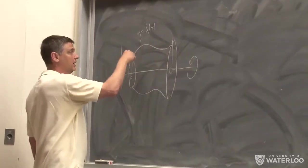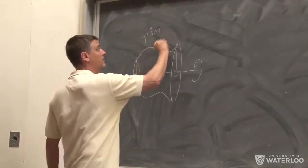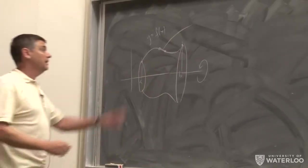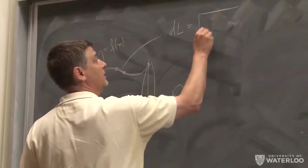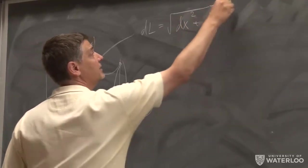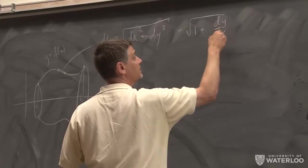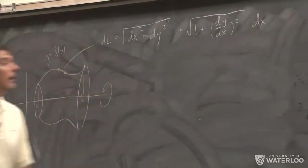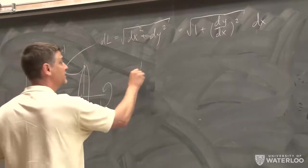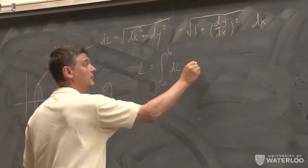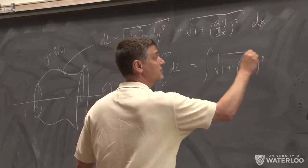To calculate arc length, you imagine cutting your curve into many small segments and approximate the length by a sum of straight line segments. A small piece of length dl is given by √(dx² + dy²), or you can write this as √(1 + (dy/dx)²) dx. You treat it as a Riemann sum, and the total arc length is the integral from a to b of dl = ∫√(1 + (dy/dx)²) dx from a to b.